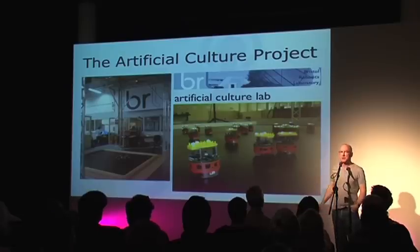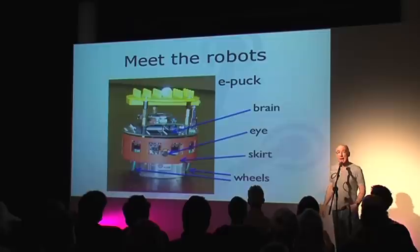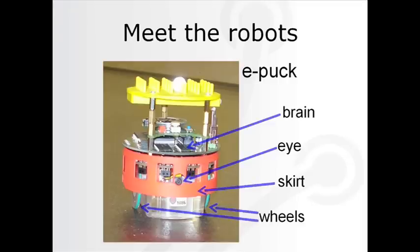This is the Artificial Culture Lab, and these are the robots. The robots are called ePucks. They have a simple eye, which is the camera. They have wheels to move. And they have a red skirt. The reason for the red skirt is that they don't see too well, so the red skirt helps them to see each other.